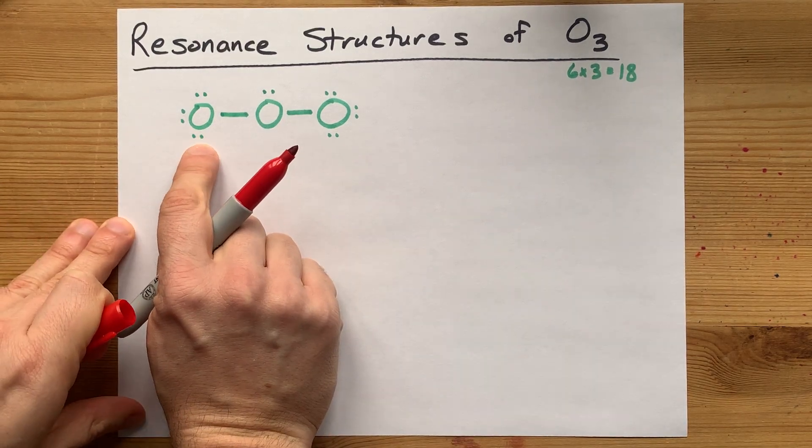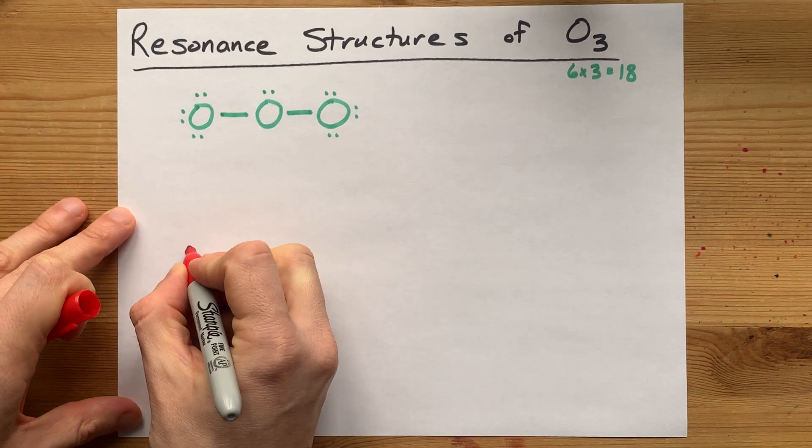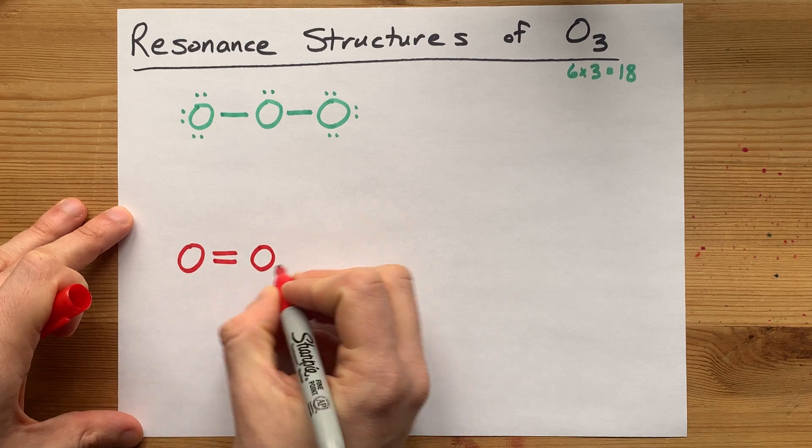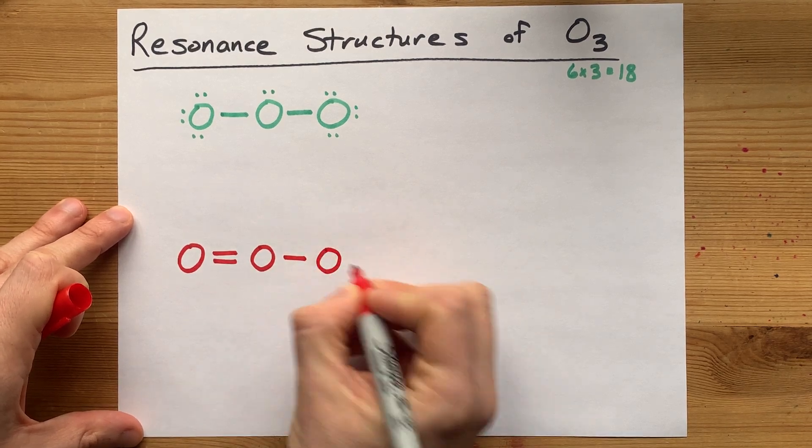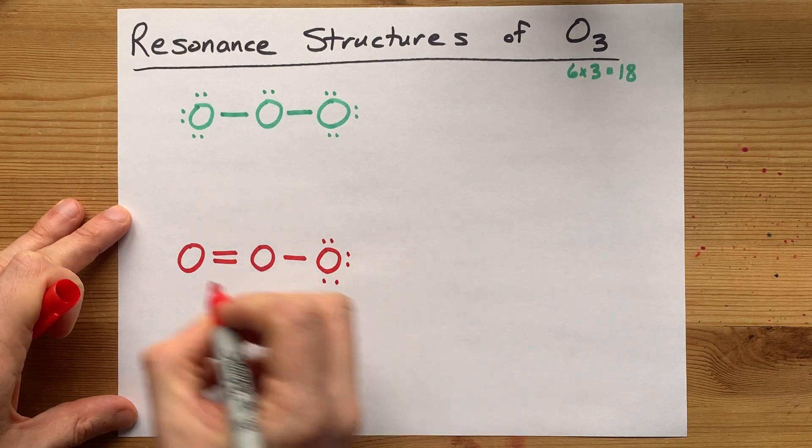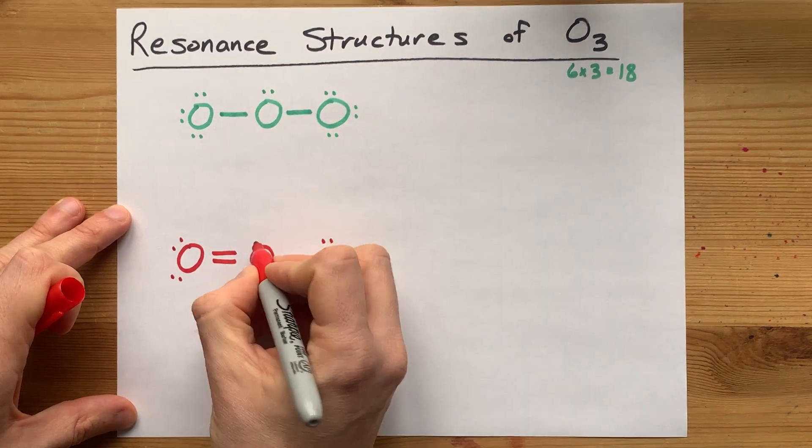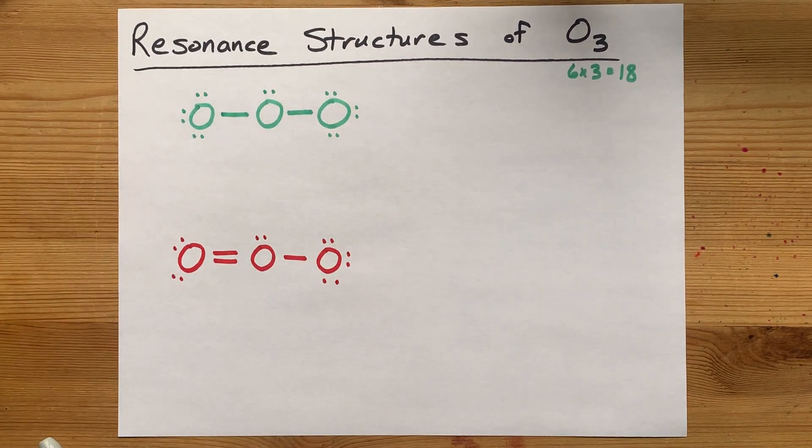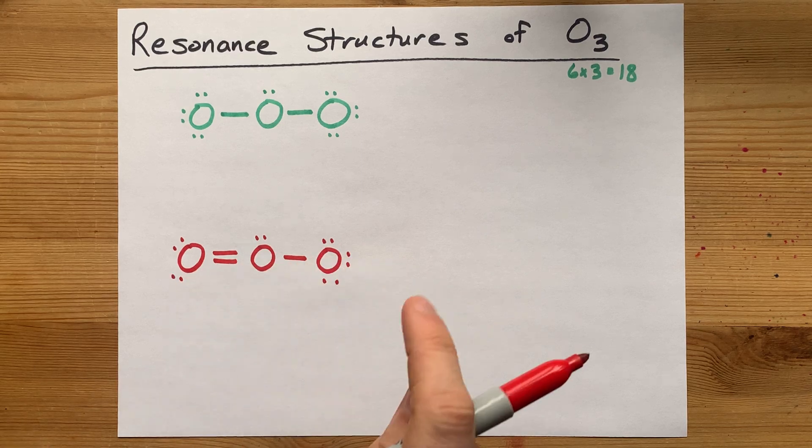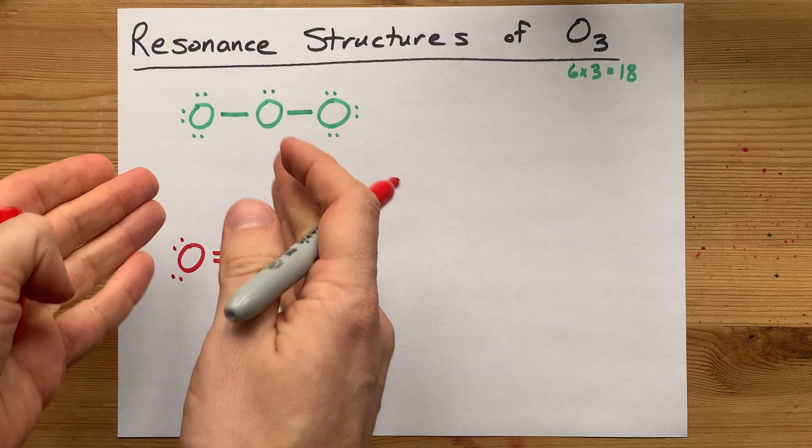So suppose these two electrons moved in to become a double bond. That would give you an oxygen with a double bond to the next oxygen, which is single bonded to the next. These lone pairs were untouched. Four of these lone pairs were untouched. And that lone pair still belongs to the center oxygen. Now each of these oxygens has a full octet, and so this is a valid Lewis structure for ozone.